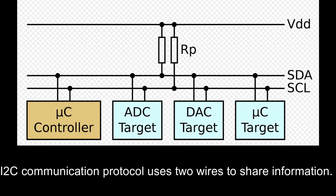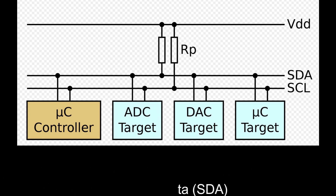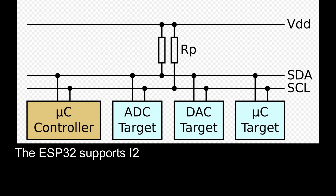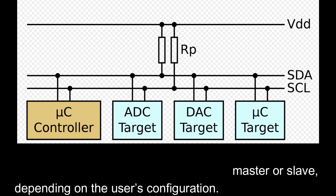I2C communication protocol uses two wires to share information. One is used for the clock signal, SCL, and the other is used to send and receive data, SDA. The ESP32 supports I2C communication through its two I2C bus interfaces that can serve as I2C master or slave, depending on the user's configuration.